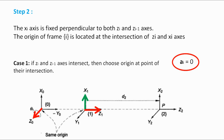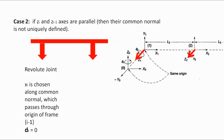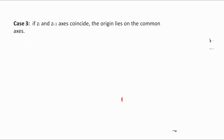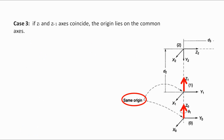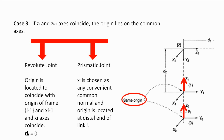Case 2: when zi and zi-1 are parallel, as shown. When the joint is revolute, xi is chosen along the common normal passing through the origin of frame i-1. This will make di equal to 0. When the joint is prismatic, xi is chosen along any convenient normal. In case 3, zi and zi-1 coincide. When the joint is revolute, the origin is located to coincide with the origin of frame i-1, and xi-1 and xi axes coincide — this also makes di equal to 0. When the joint is prismatic, xi is chosen as any convenient common normal, and the origin is located at the distal end of link i.